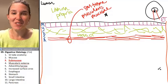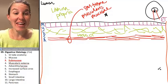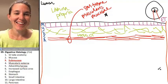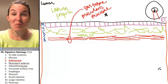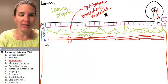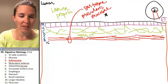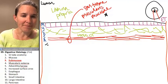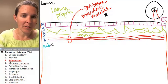Sometimes the names of the structures in anatomy land are easy. Deep to the mucosa is a layer called something fantastic. Are you ready? It's the submucosa. Submucosa.